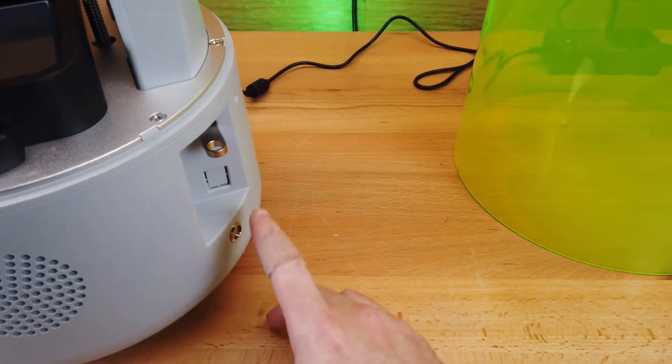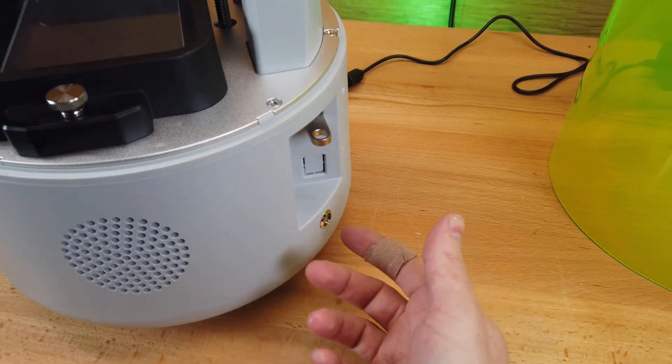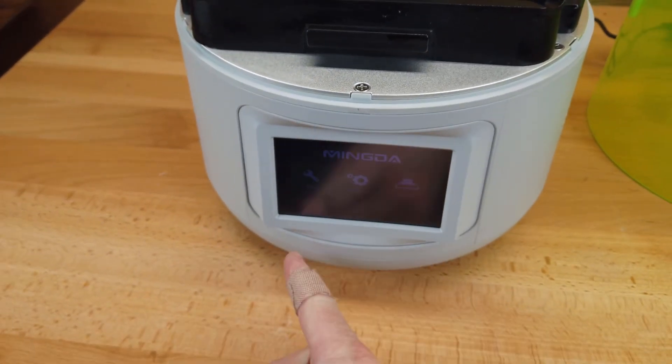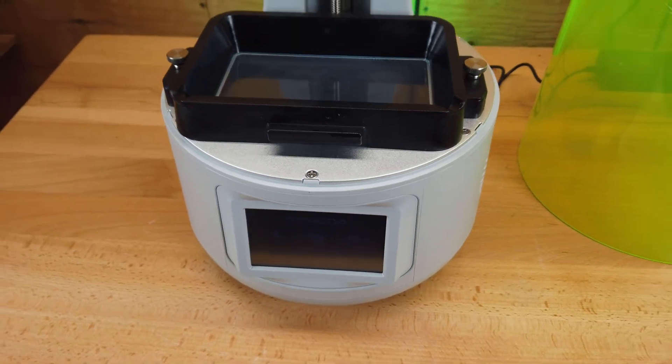Based on personal preference, having the USB and this tiny little power button in the back is really inconvenient. It'd be a lot better if they're just on the front or at least on the side where you can easily see them and get to them.